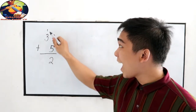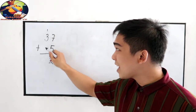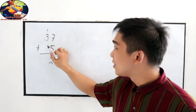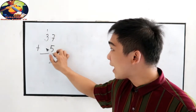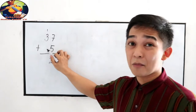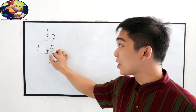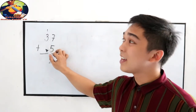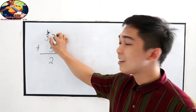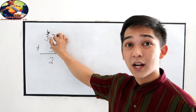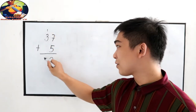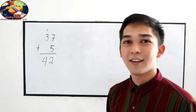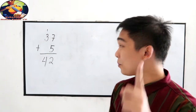Then add the numbers in our 10's place. So 3 plus — we don't have a 10's place number, so that is 0. 3 plus 0 is 3. Then add our carry 1, which is 1, which gives us 4. So the sum is 42.